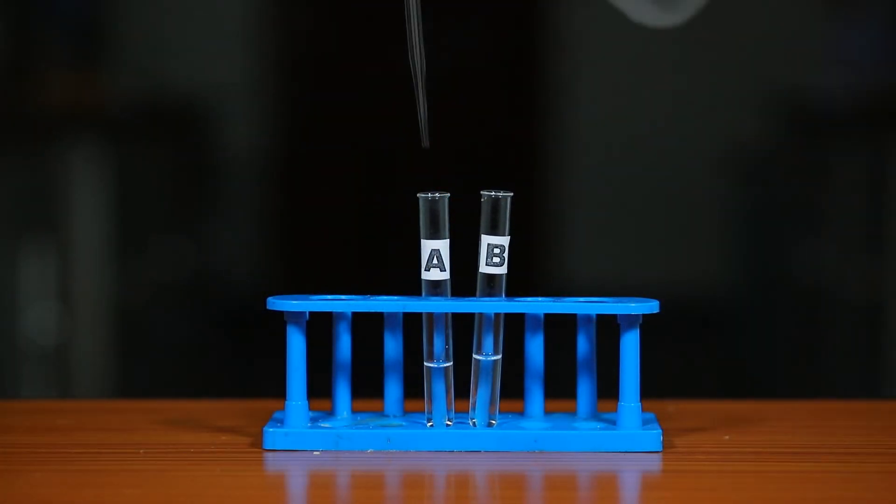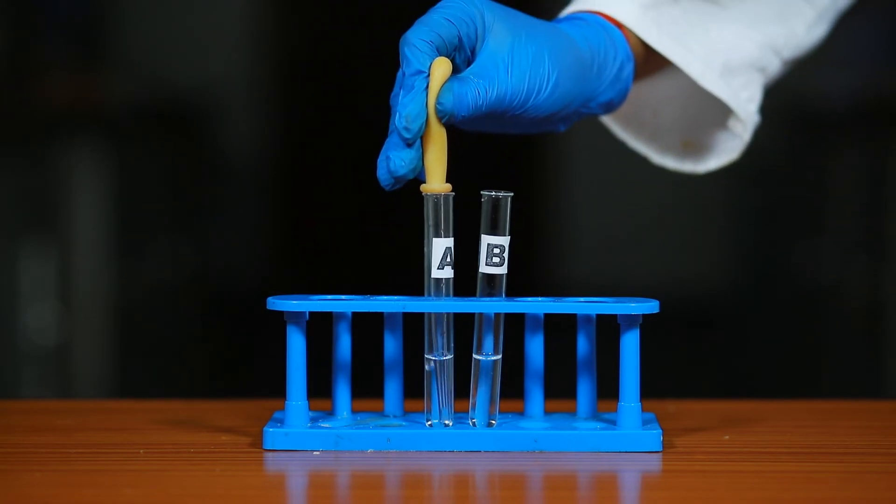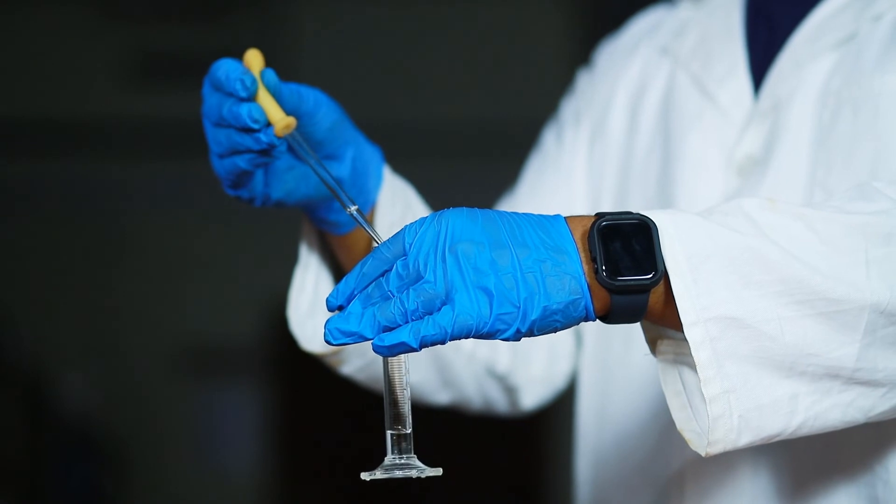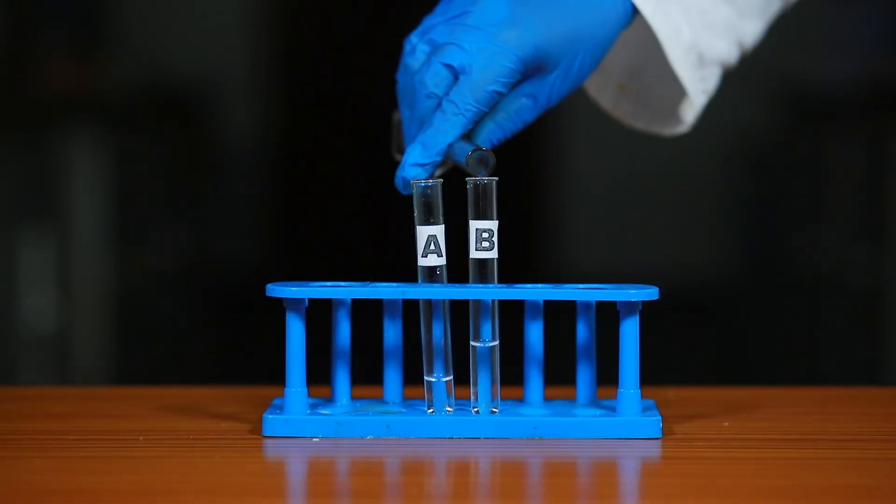Add dilute HCl dropwise from test tube A to dilute NaOH contained in test tube B.